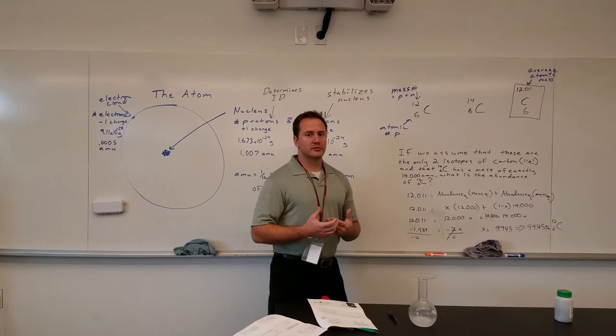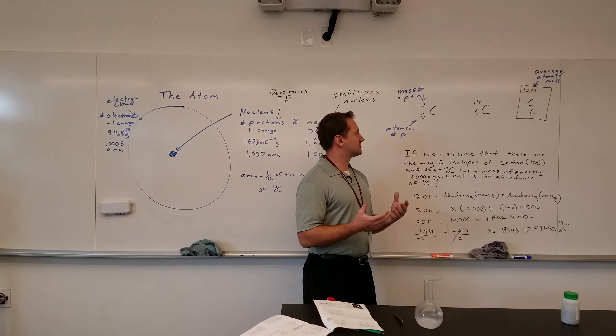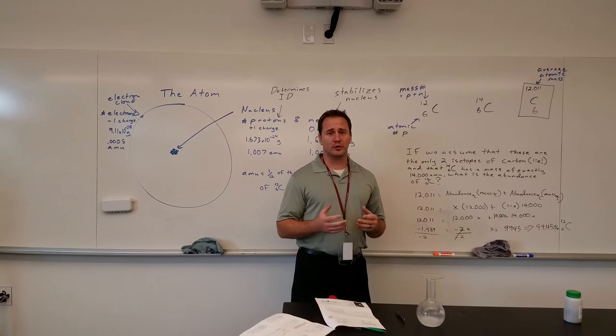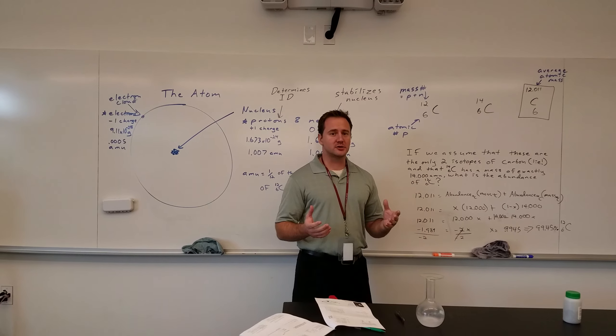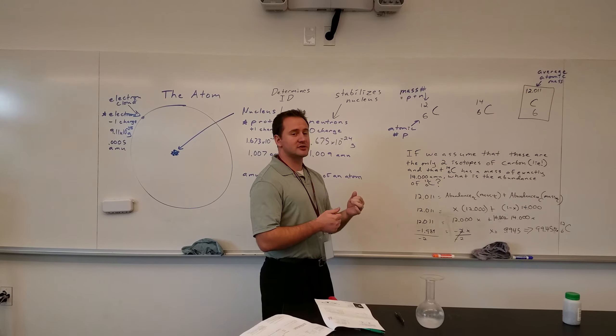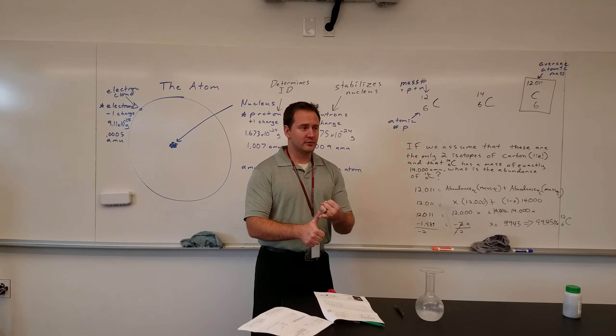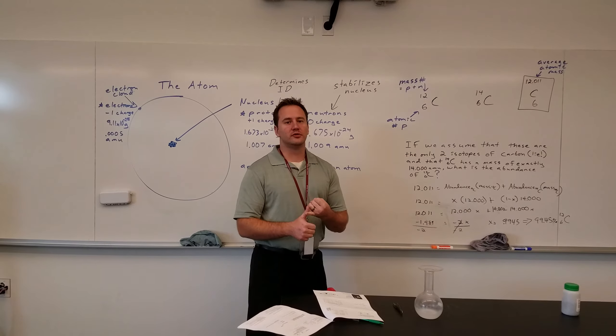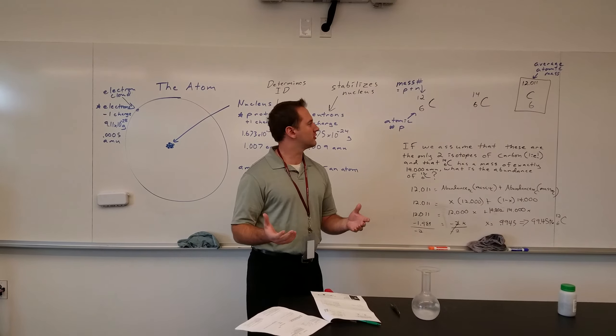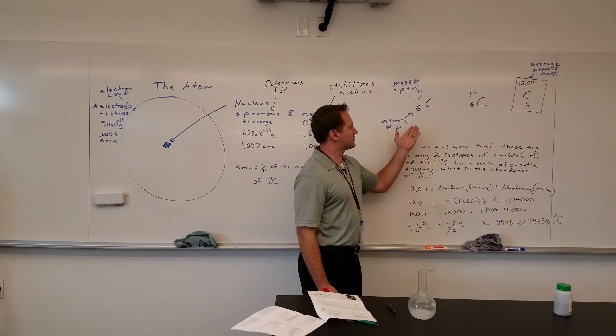Now, carbon atoms can actually exist in multiple forms. And a lot of elements actually have multiple forms. And we call those isotopes. Now, the number of protons determines the identity. So, all carbon atoms have six protons, but they can differ in the amount of neutrons. Really, there's a couple different isotopes, but for the sake of this video, let's just assume there's two.